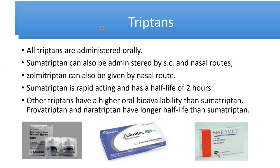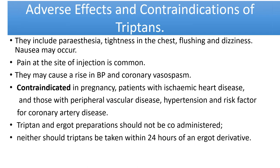All triptans are administered orally. Sumatriptan can also be administered subcutaneously or by nasal route; zolmitriptan can also be given by nasal route. Sumatriptan is rapidly acting with a half-life of about two hours. Other triptans have higher oral bioavailability than sumatriptan. Frovatriptan and naratriptan have longer half-lives than sumatriptan.